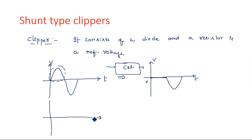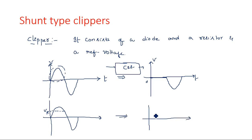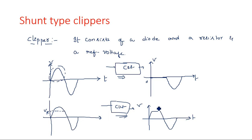Suppose I don't want to eliminate the complete positive peak — I want to eliminate only a part of the positive peak. Taking the same signal and adding a reference supply Vr, I want to clip above the reference supply while keeping the remaining signal as it is. The output will appear with only the portion above Vr eliminated, while the rest of the sinusoidal signal is preserved.